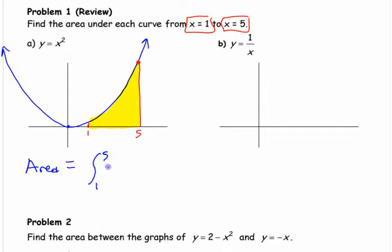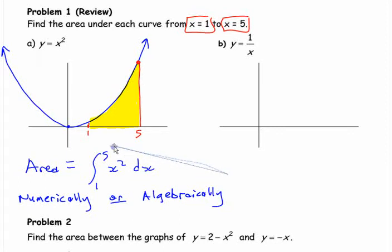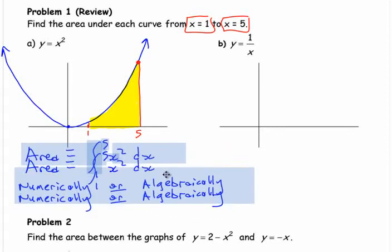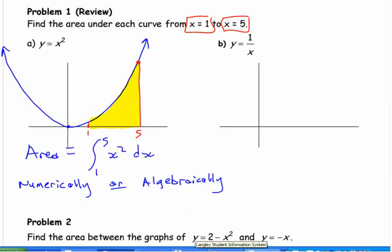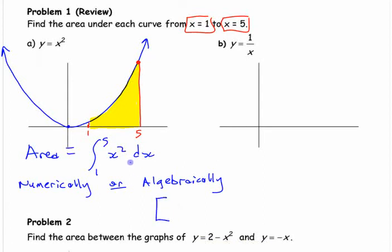Integrate, integral from 1 to 5 of x squared dx, right? Or you can evaluate that numerically with the calculator or analytically, or algebraically or whatever. If you're doing it algebraically, you need to use an antiderivative of this and evaluate it from 1 to 5, right?